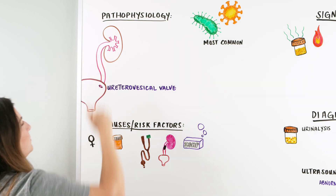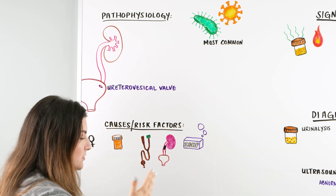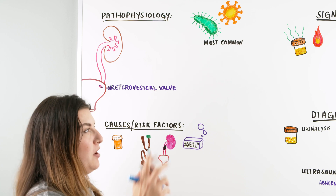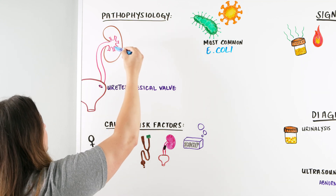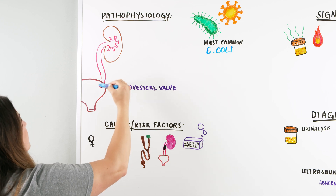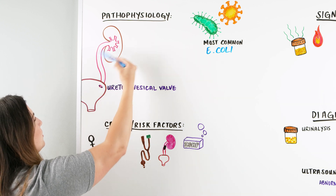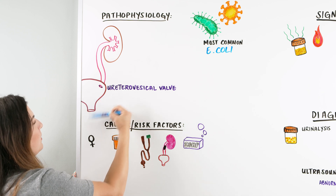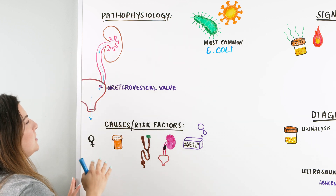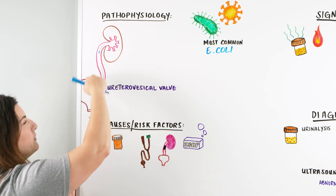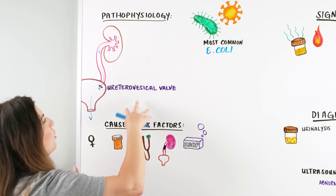We can think of pyelonephritis, we can think of cystitis. There is one common causative agent for a UTI: E. coli. In the normal anatomy of the urinary tract, there is a urovesical valve that allows urine to go into the bladder and not backflow back into our ureter. Urine flows in this downward passage in and out of the body. When we have backflow, a blockage, an obstruction, or some type of abnormality within our structure, we can get issues that are going to cause a UTI.